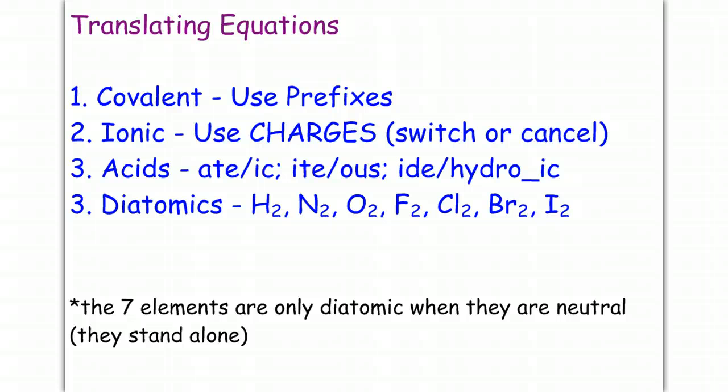So translating equations, we're gonna have to be able to watch out for the following. First, if you have a covalent compound, you want to use prefixes. Pay attention to the prefixes to determine what your compound is. If it's ionic, you've got charges that you have to switch or cancel. If it's an acid, then pay attention to if it's an -ic, -ous, or hydro -ic acid.